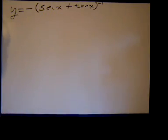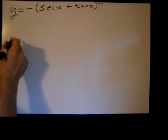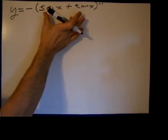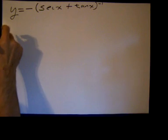We're going to use the chain rule. I don't see any point in doing anything else to this first. We'll look at the outside function. The outer function is negative something to the negative one.